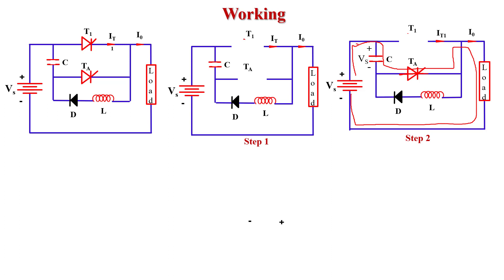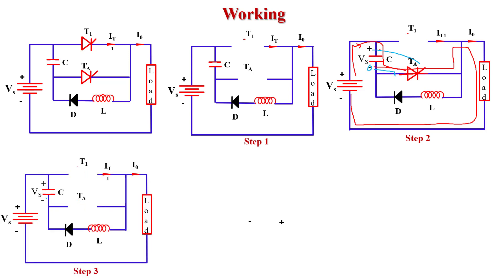When current follows this path, the capacitor starts charging with Vs supply voltage. When the capacitor is completely charged, the polarity across it is upper plate positive and lower plate negative. At this point, this polarity turns off TA thyristor, because the auxiliary thyristor's anode is connected from the negative of the capacitor. So this polarity of the capacitor turns off TA, and TA behaves like an open circuit.